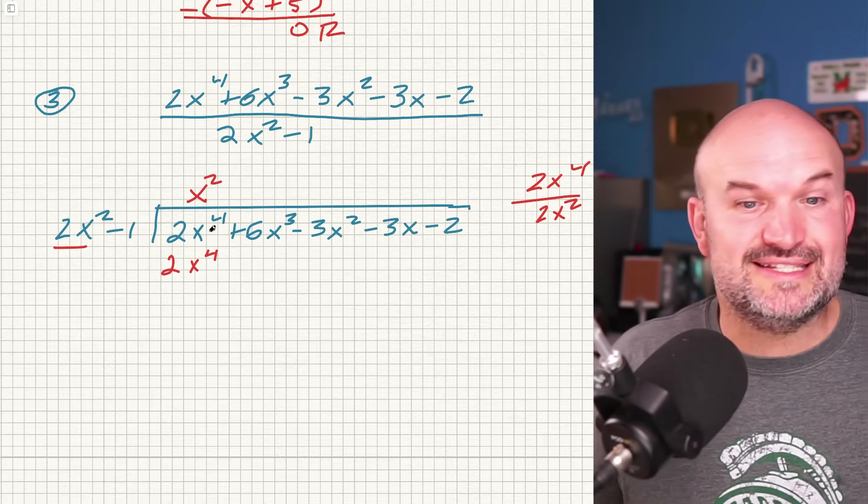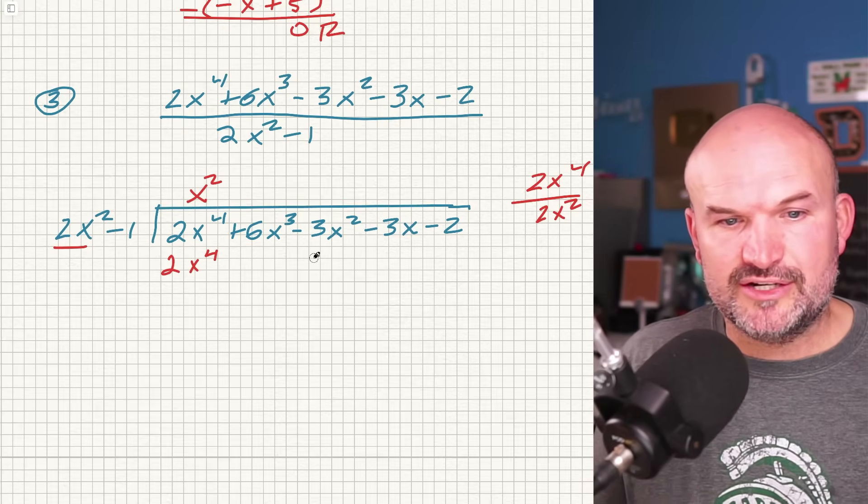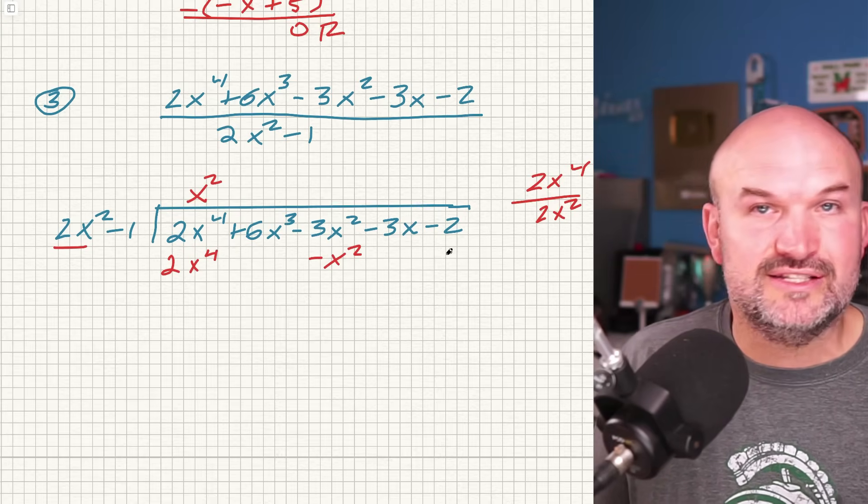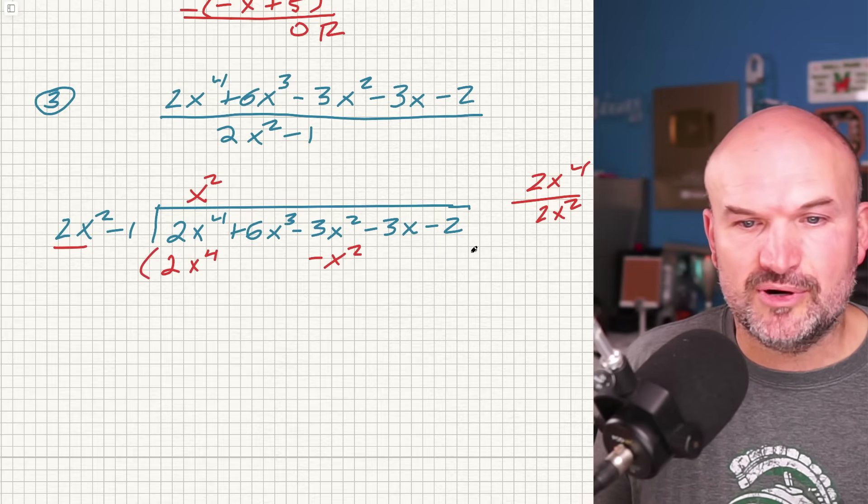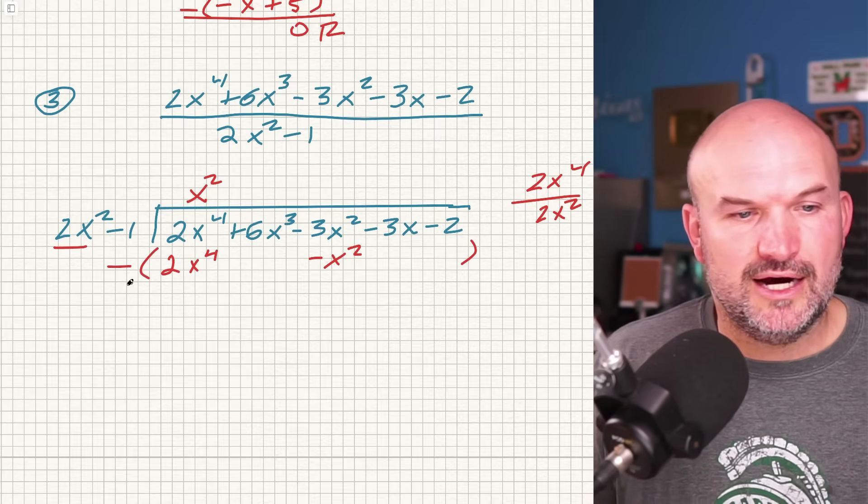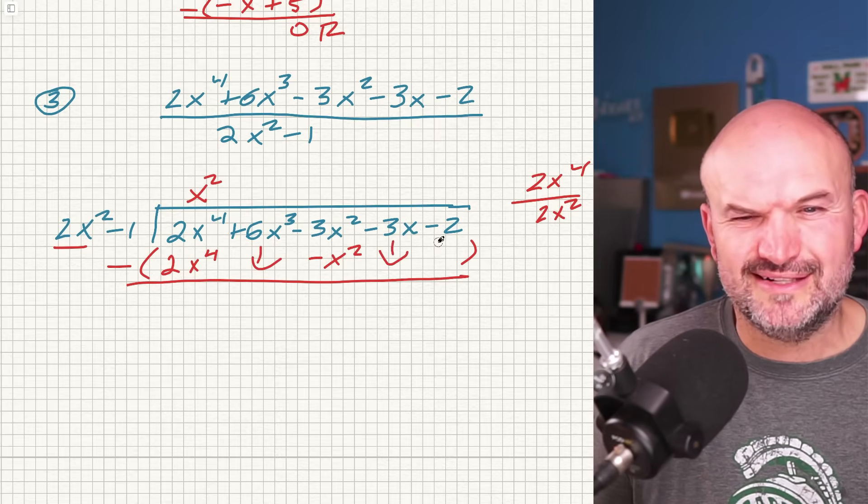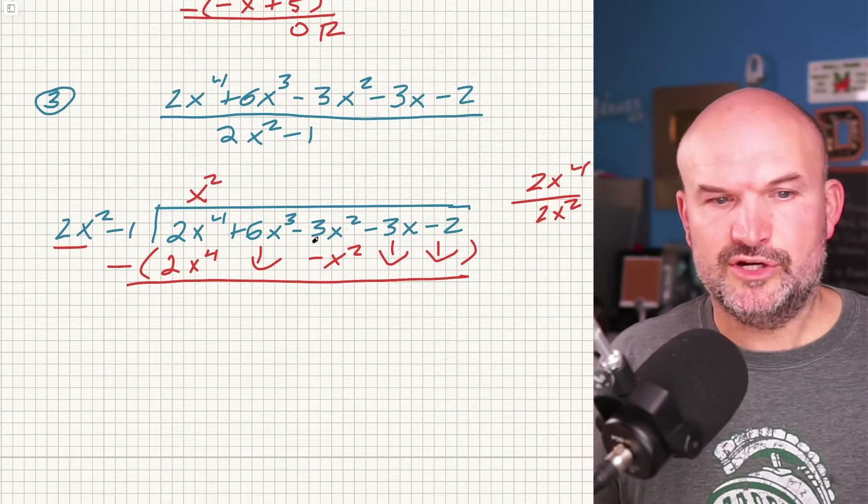Now again, multiply by both terms. X squared times 2x squared is 2x to the fourth. It's the exact same. That's what I want. X squared times negative one is negative x squared. Now I don't want to put it here because those are not like terms. So I want to make sure I put that over here. Again, could you put a zero x cubed there and a zero x and a zero? Yes, you could use your place values, but for simplicity purposes, I am just going to bring them down. I'm just going to put an arrow and just bring down because you're subtracting them from zero.